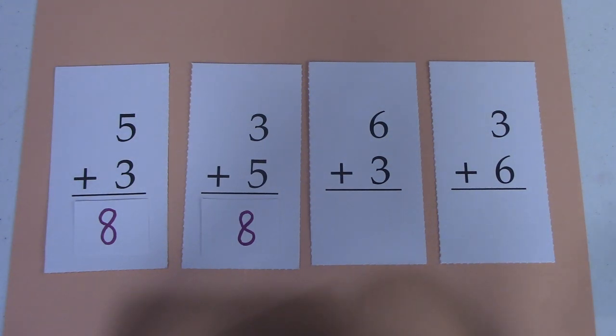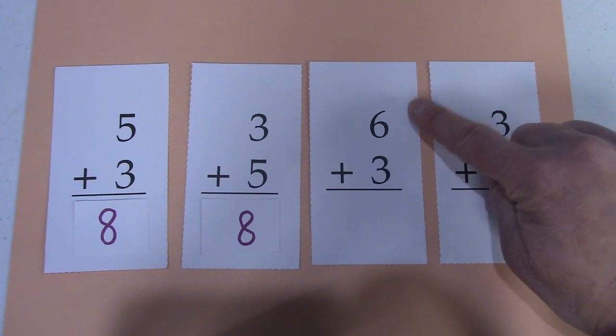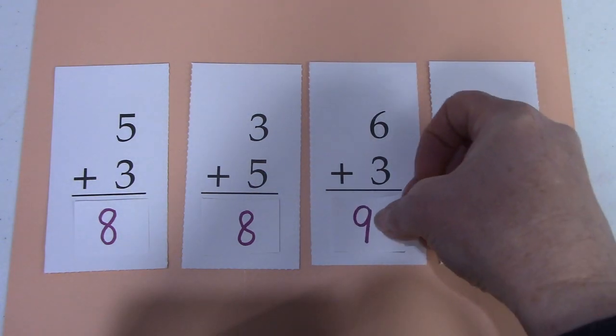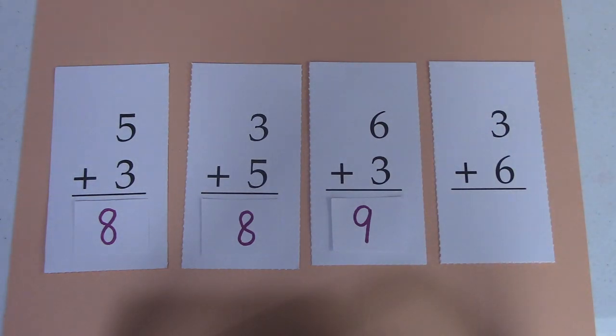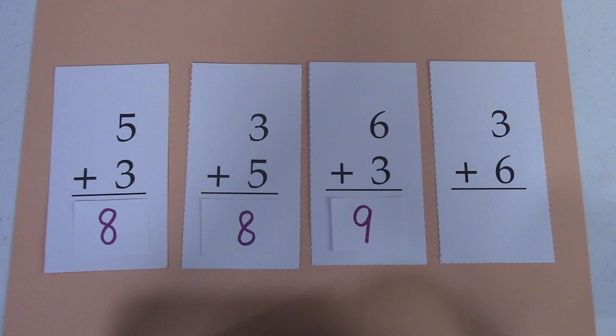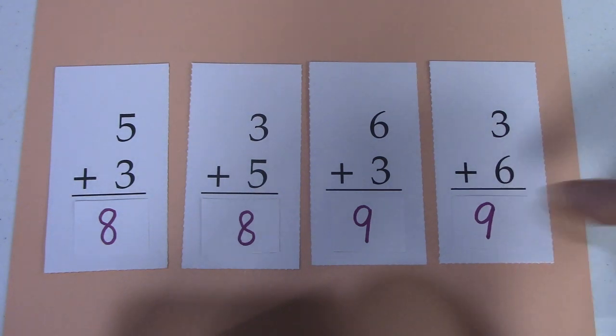Let's look over here. We have 6 plus 3. 6, 7, 8, 9. The answer is 9. Our answer is 9. Do you want to guess what the answer will be for 3 plus 6? Let's try it. 6, 7, 8, 9. The answer is also 9. Our switcheroo facts have the same answer.